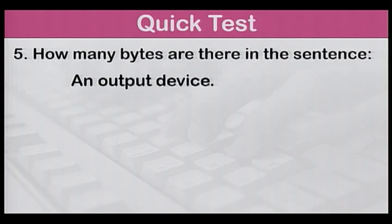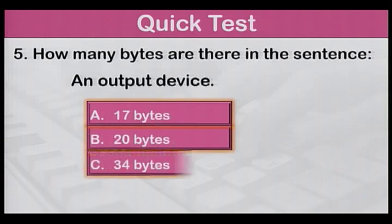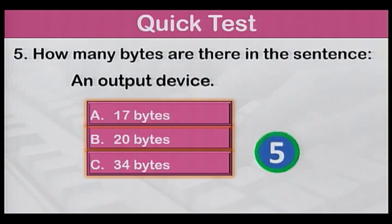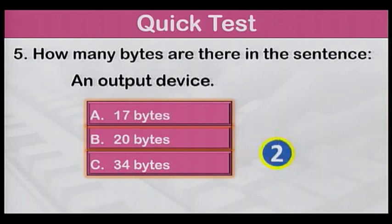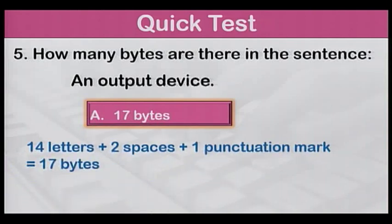Number five: How many bytes are there in the sentence "an output device"? A: 17 bytes, B: 20 bytes, or C: 34 bytes? The answer is A, 17 bytes. Because there are 14 letters, two spaces, and one punctuation mark in the sentence, making a total of 17 bytes.